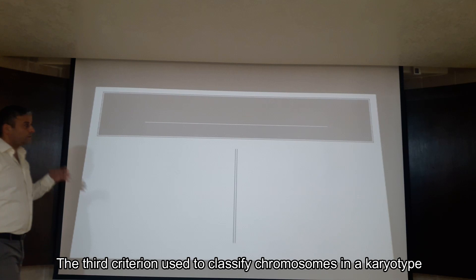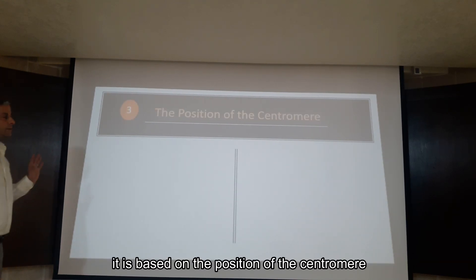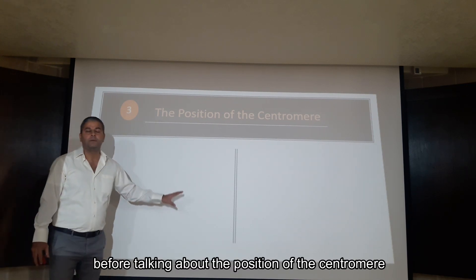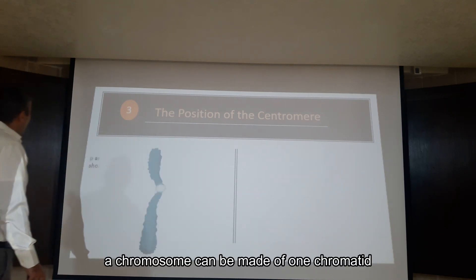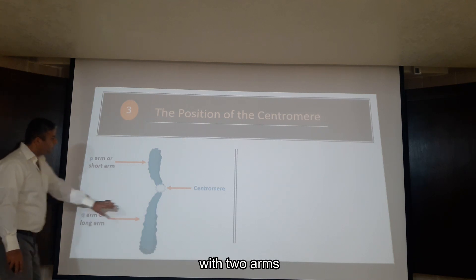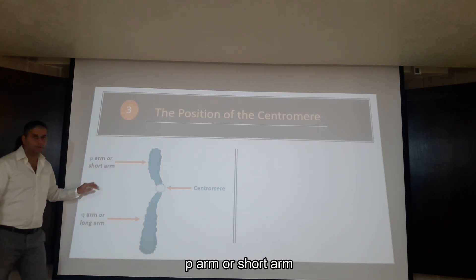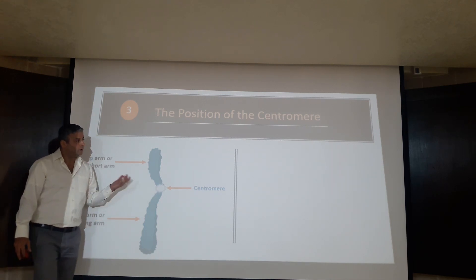The third criteria used to classify chromosomes in karyotypes is based on the position of the centromere. Before talking about the position of the centromere, let's see how a chromosome is organized. A chromosome can be made of one chromatid with two arms, P-arm or short arm, Q-arm or long arm, joined with a centromere. Also,